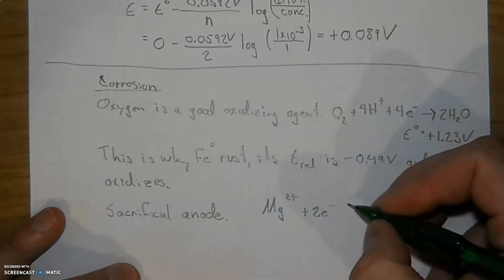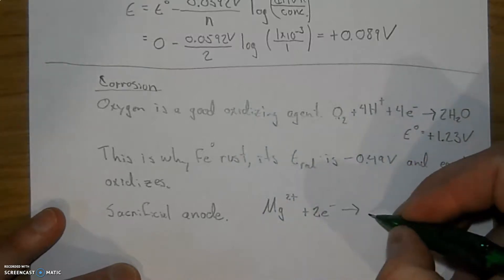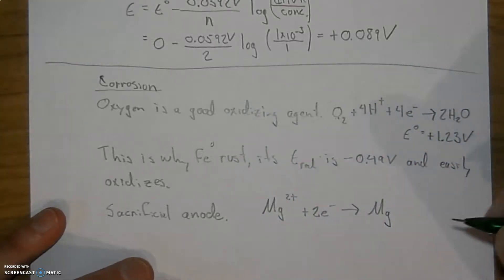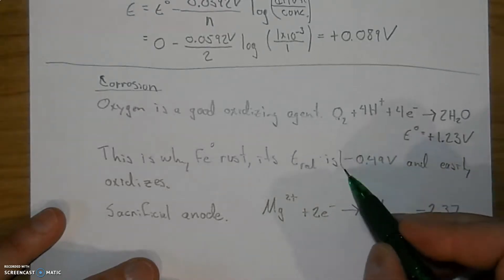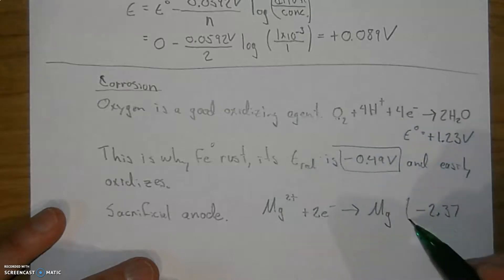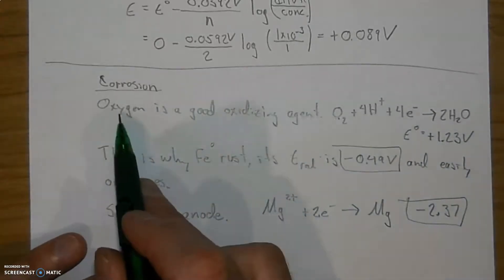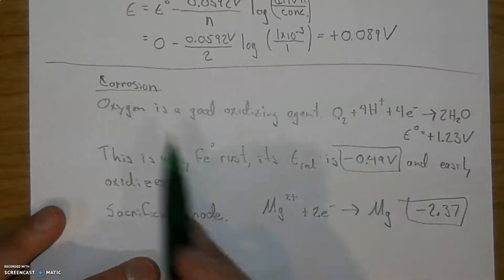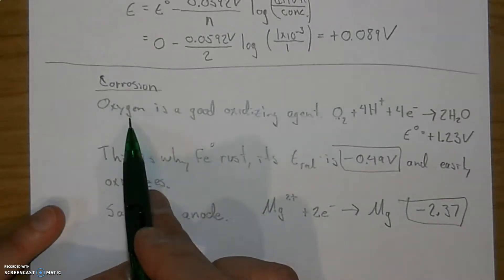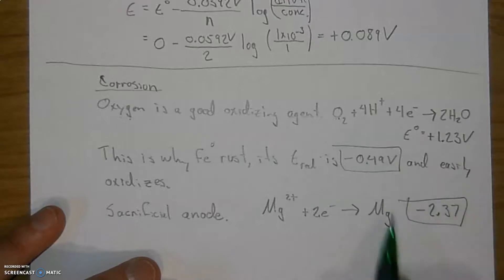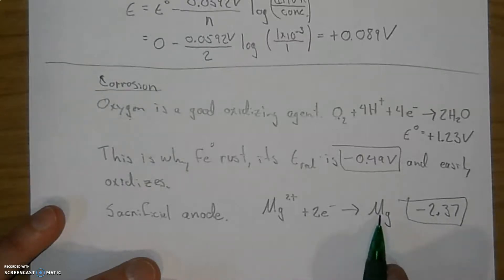Magnesium plus two electrons will turn into magnesium metal, and that has a reduction potential of negative 2.37, which is even larger than what we had for iron. So when the two metals are present and oxygen is going to react with one of them, oxygen is going to be gaining electrons and one of these two is going to be losing electrons. Magnesium by far steps forward, if you will, and acts as the metal that will be oxidized, losing its electrons.